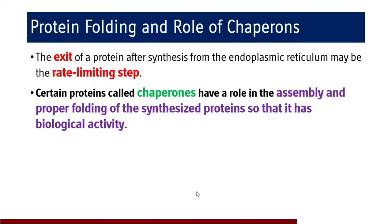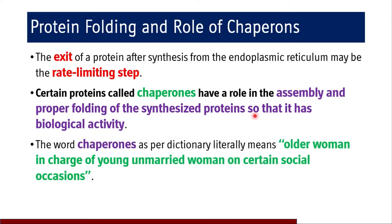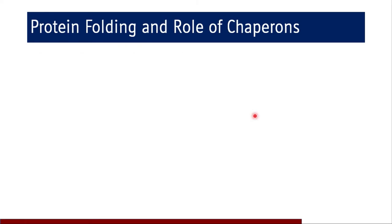The proper folding of protein is under the influence of chaperones. These are certain proteins which help in the assembly and proper folding of the synthesized protein so that it has biological activity and can subserve the function it is intended to. The word 'chaperon' literally means the older woman in charge of a young unmarried woman on social occasions — if the young woman is not properly dressed and presentable, she won't be allowed in. Similarly, if proteins are not properly folded, they won't be released from the endoplasmic reticulum into the cytoplasm.